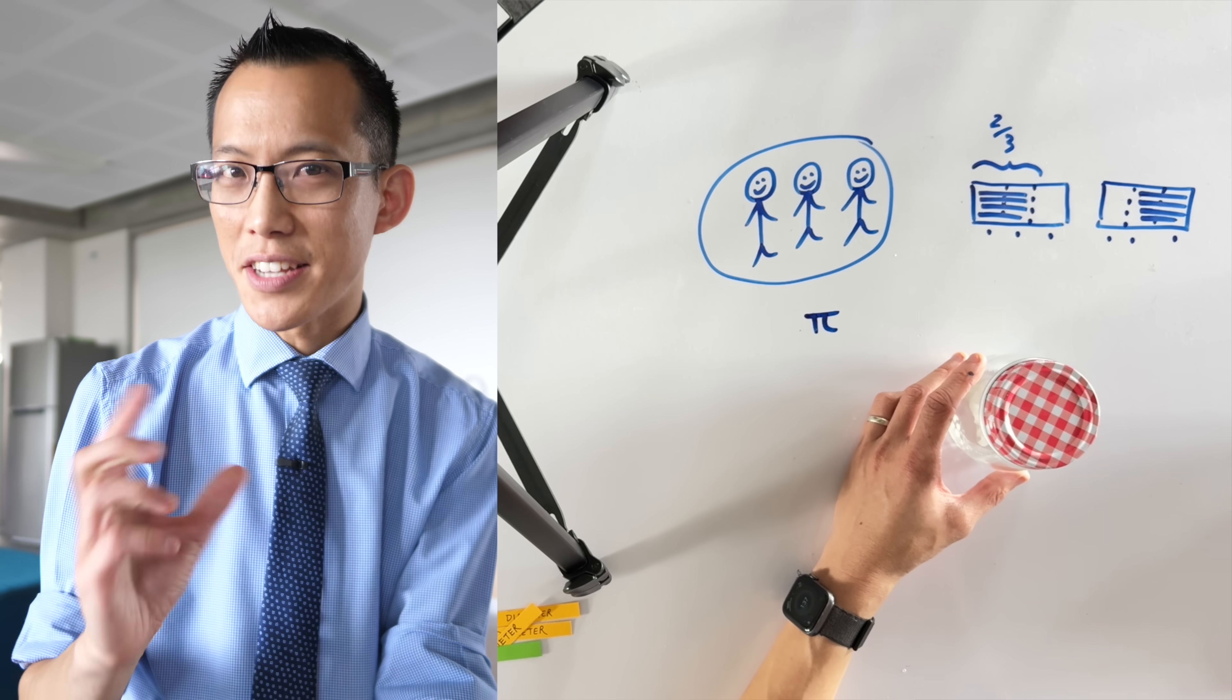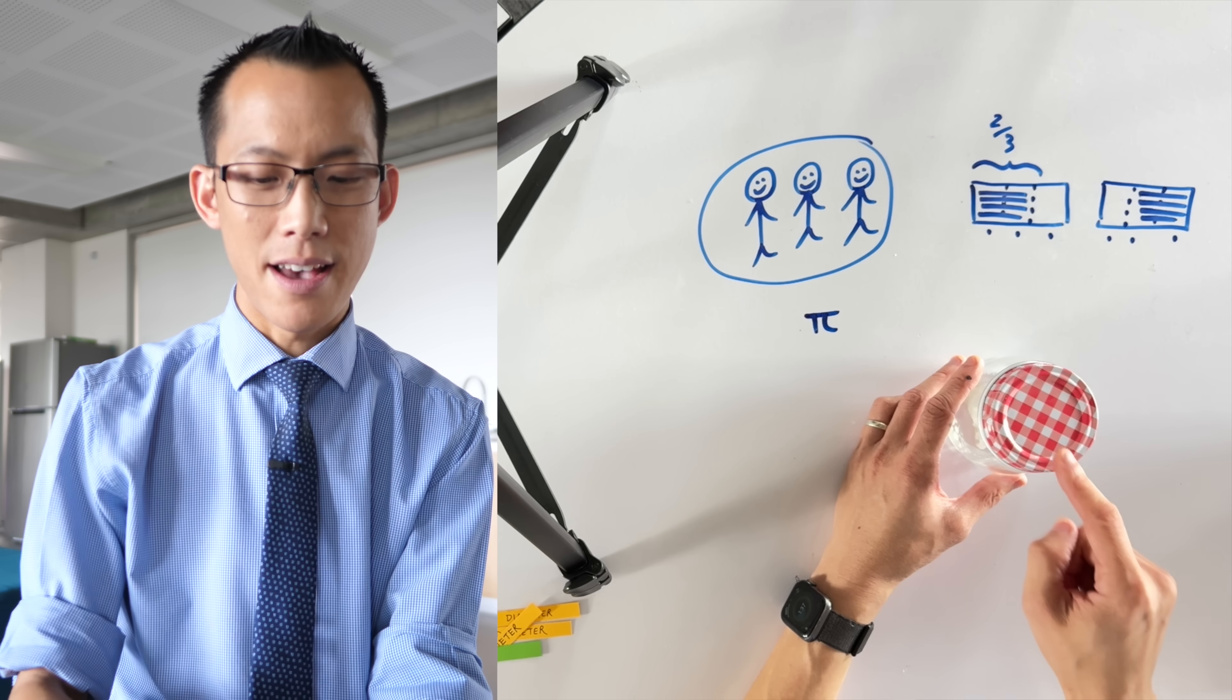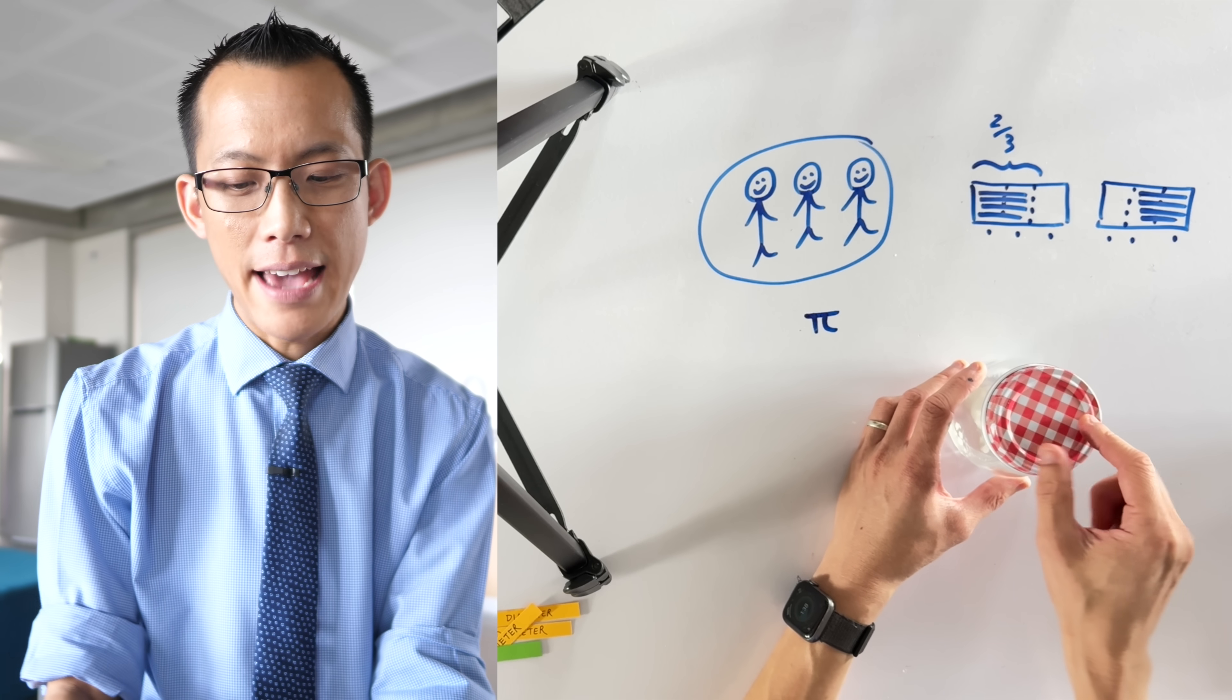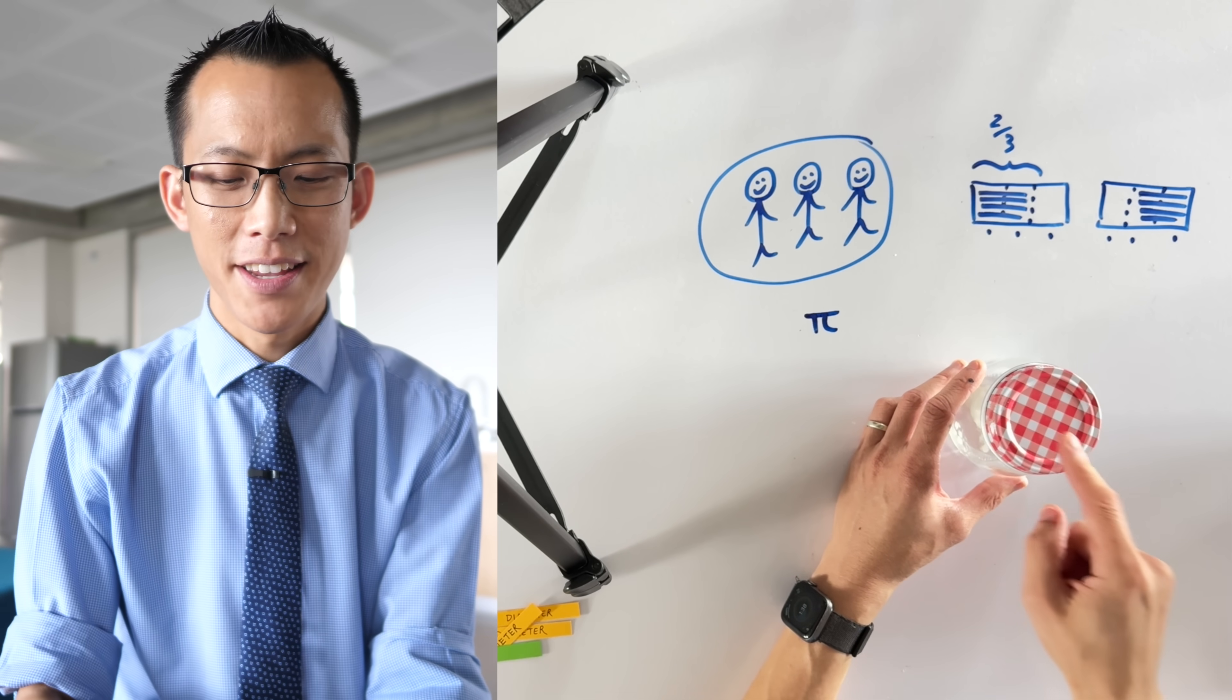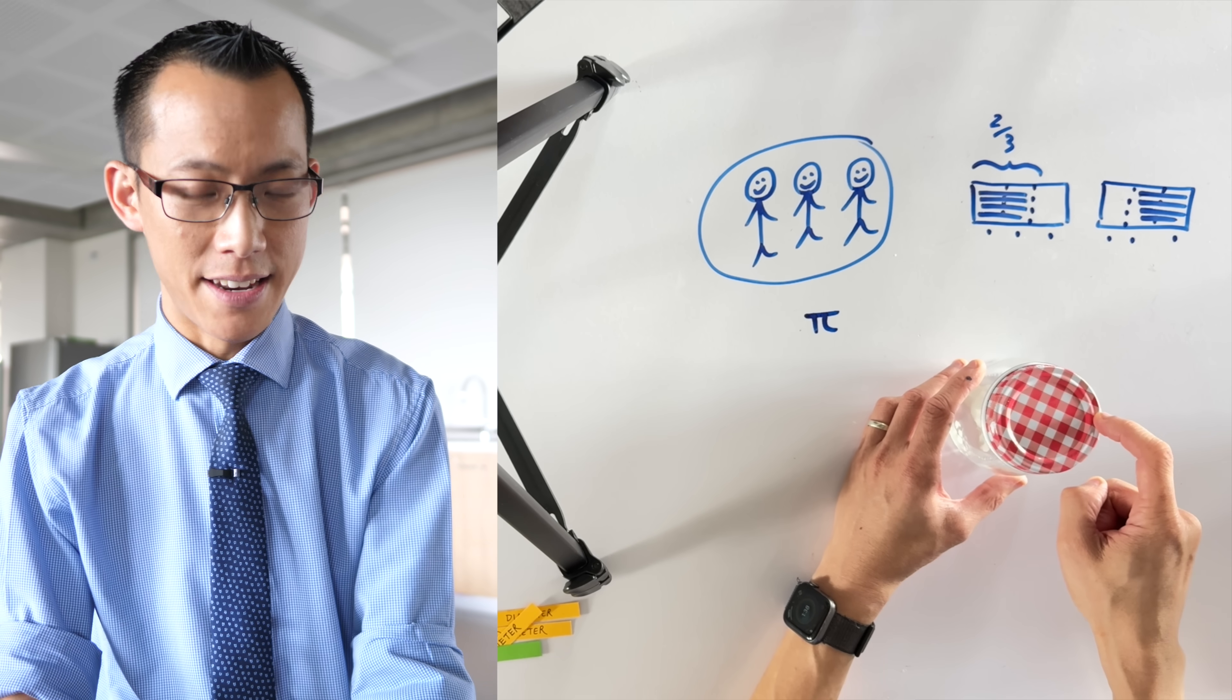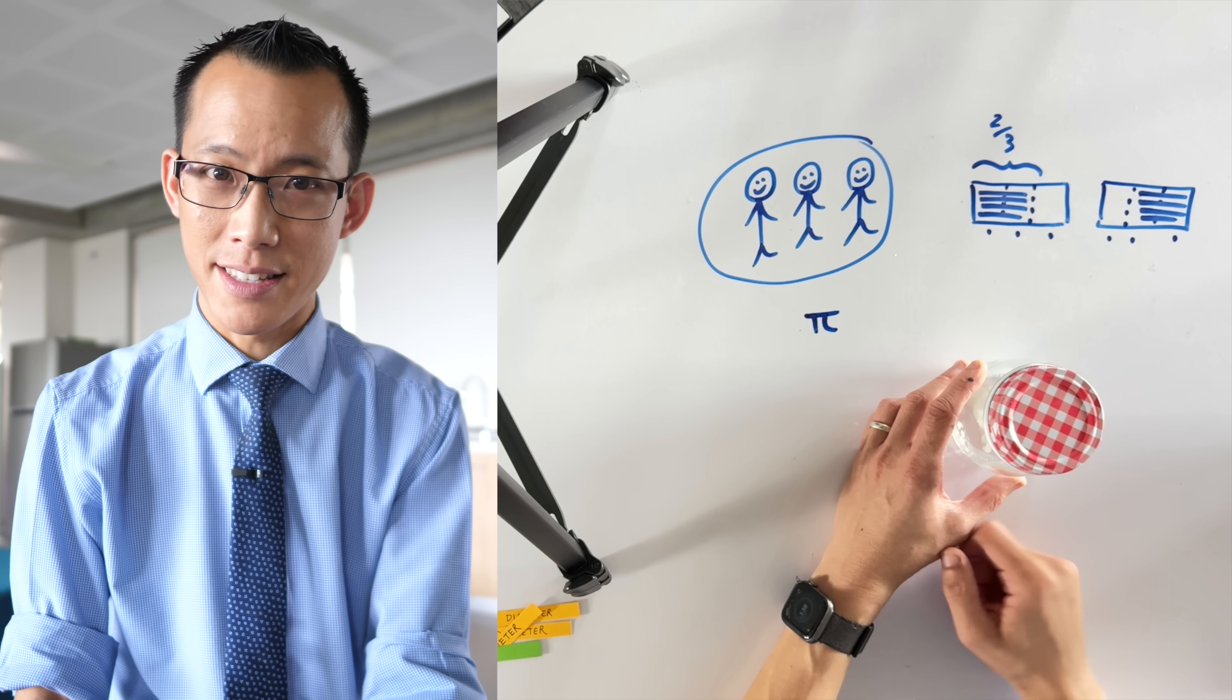By the way the word diameter literally means what it sounds like. It's a measurement, a meter, and it is across or dia, again Greek word, from one end of the circle to the opposite end. So that diameter there is that distance across.